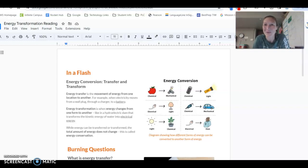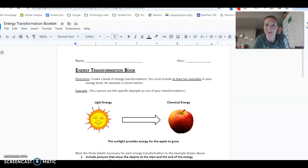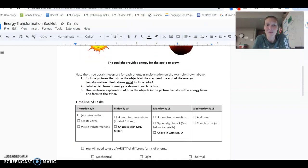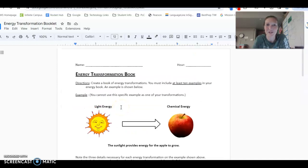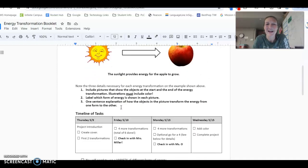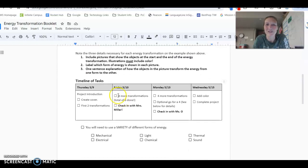Then the rest of the time you're going to be working on your energy transformation booklet. Once you have your booklet, what I would like you to do is to look at your description here that you should have tucked in your booklet from yesterday. And our to-do list for today is to do four more transformations. So by the end of today, you should have a total of six done.